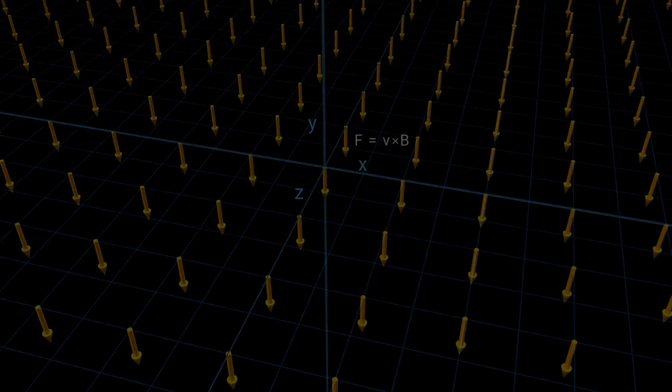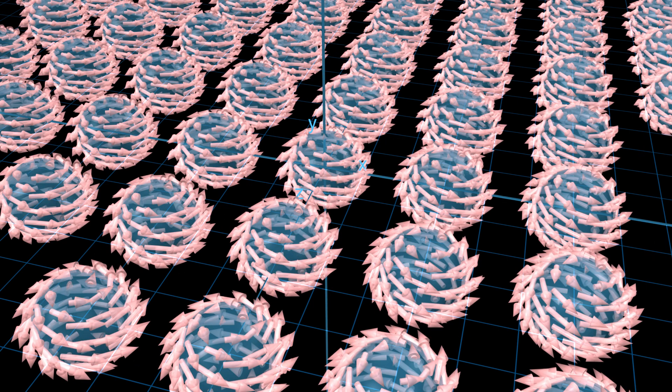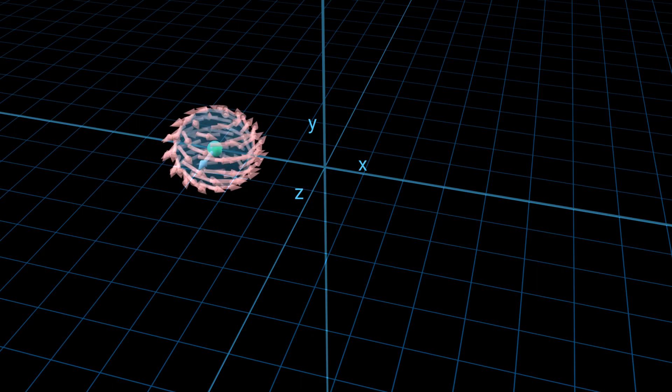Now let's put this tensor to use in a simulation. Instead of a vector field and the cross-product formula, we'll use our new method, a tensor field. Each point in space has a tensor. Say a particle enters this field, moving with some velocity. The tensor at its current point maps its velocity to a force. This is the force the particle will experience and its path will bend.